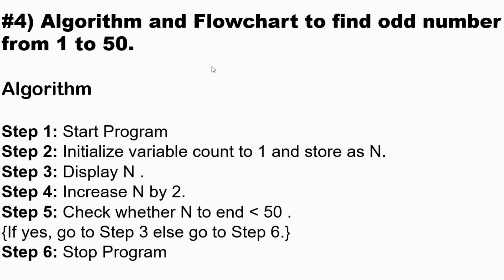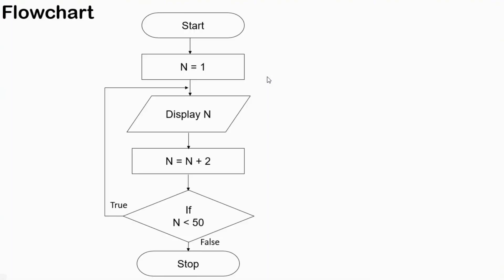Now let's look at another program: algorithm and flowchart to find odd numbers from one to fifty. Algorithm: Step 1: start program. Step 2: initialize variable count to one and store as N. Step 3: display N. Step 4: increase N by two. Step 5: check whether N is less than 50 — if yes, go to step three; else go to step six. Step 6: stop program. It is similar to question number two but a little bit different.